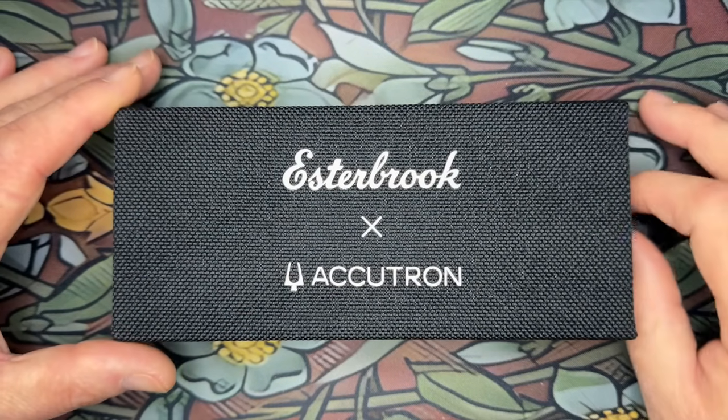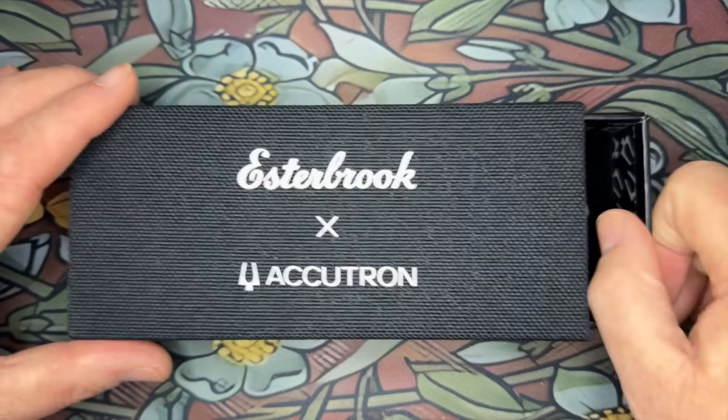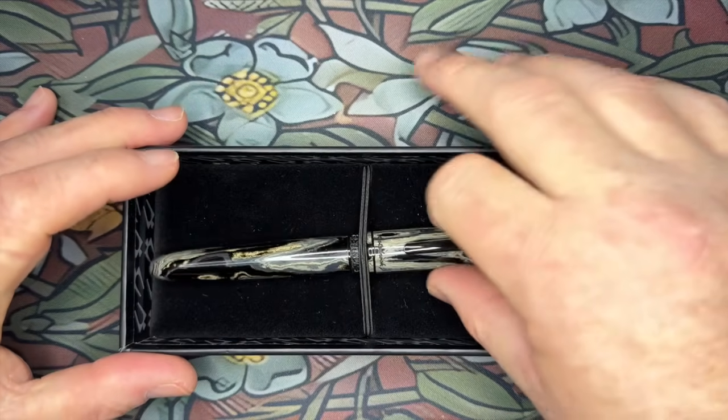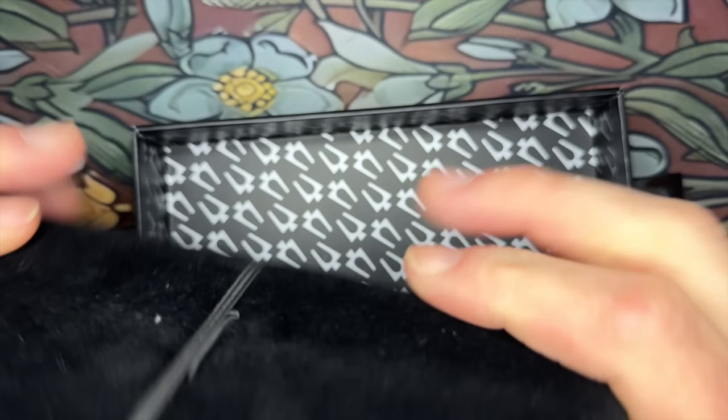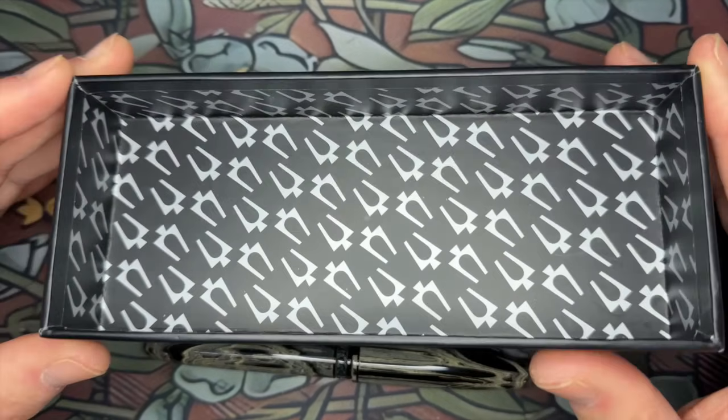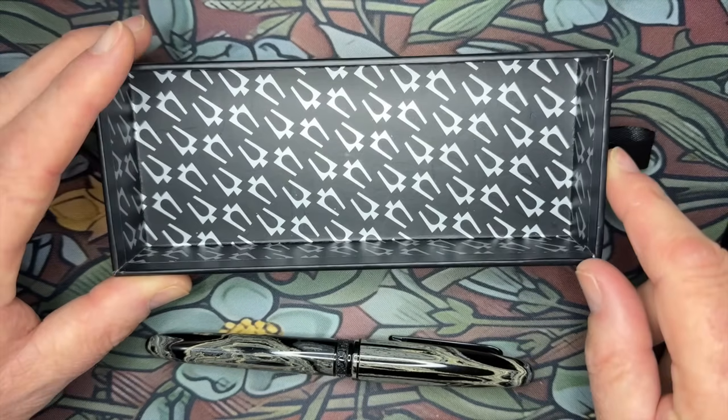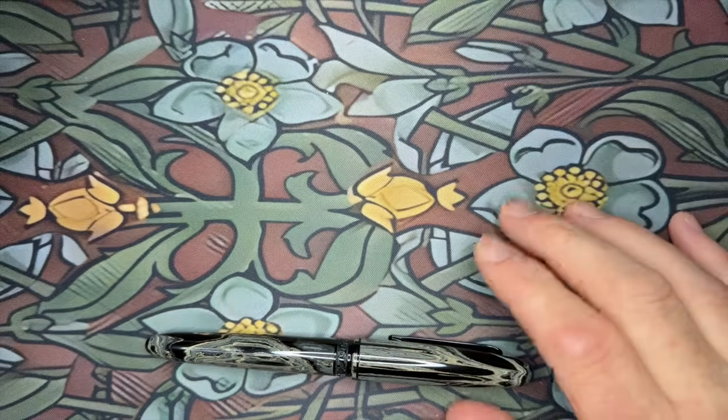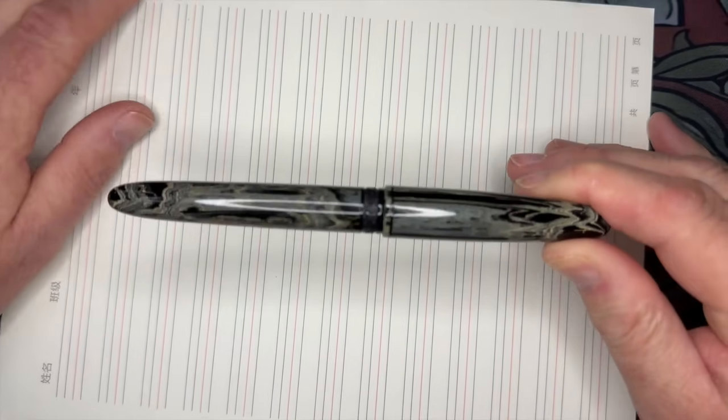Off of the paper sleeve now. I think because it's a collaboration or special edition, it's a slide out box instead of the lift up one that we're used to with Esterbrook's. You can see we have a pen holder in here that's part of the box. I wouldn't use that long term. The inside is the Accutron logo in black and silver.